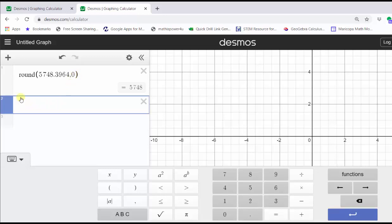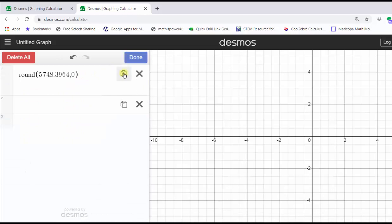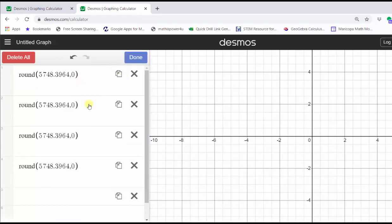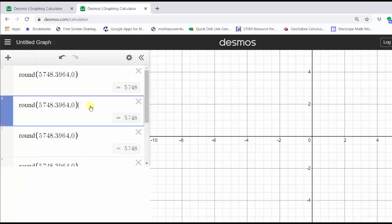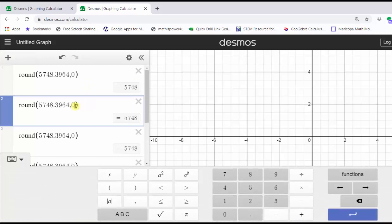Or we can also click in cell one, click the gear, and then click Duplicate three times. Notice how it populates cell two through cell four with the same information. And now we can go to cell two and change the zero to a one, which will round the number to the tenths place value, or one decimal place. Let's go ahead and close the Desmos keypad.